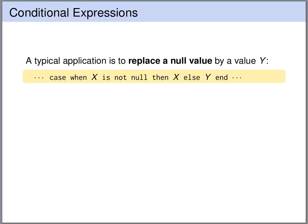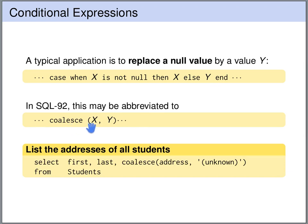A very common application of case distinctions in SQL is to replace null values by some other default value — for instance, replacing a null with something human-readable when producing a report. In SQL we can do this using a CASE statement: CASE WHEN x IS NOT NULL THEN x ELSE y END, where y is the default value used wherever x is null. Because this pattern is very common, there is an abbreviation: we can simply write COALESCE(x, y), which replaces all null values of x with y.